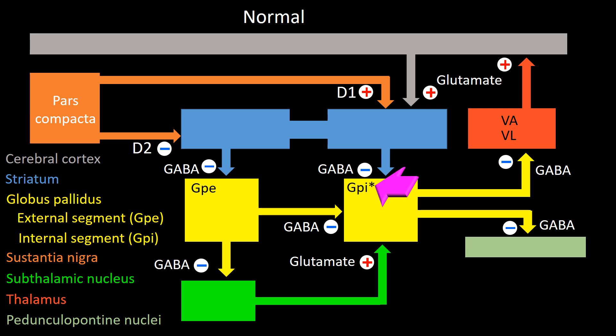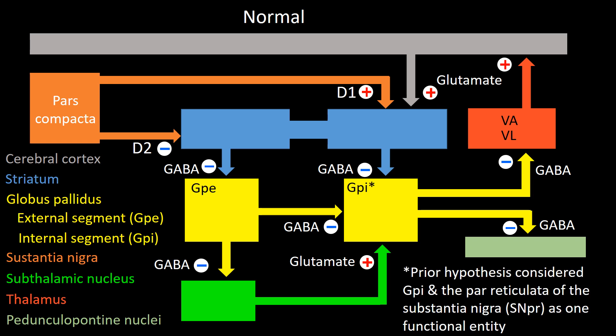The 11th connection also goes from the pars compacta of the substantia nigra to the striatum — this is an excitatory connection mediated by dopamine 1. It is important to note that a prior hypothesis to explain Parkinson's disease considered the internal segment of the globus pallidus and pars reticulata of the substantia nigra as one functional entity, which may cause confusion when reading various versions.